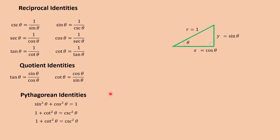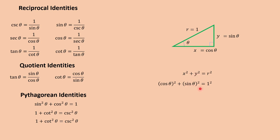Another group would be the Pythagorean identities. First, we have sine squared theta plus cosine squared theta is equal to 1. By the Pythagorean theorem, from this red triangle, we can have x squared plus y squared is equal to r squared. By substitution, we can have x as cosine theta and y as sine theta, and r is equal to 1. Simplifying, we get sine squared theta plus cosine squared theta is equal to 1.